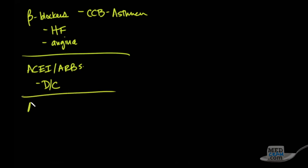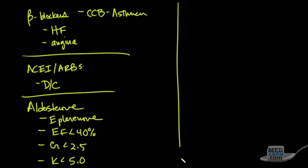Another one are the aldosterone inhibitors, and the big one there is eplerenone. But you've got to be careful with eplerenone. It was used in patients with ACE inhibitors if the ejection fraction was less than 40%, if the creatinine was less than 2.5, and if the potassium was less than 5.0.